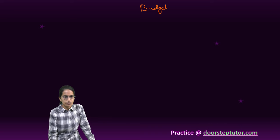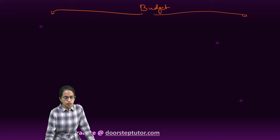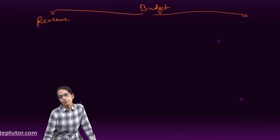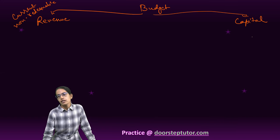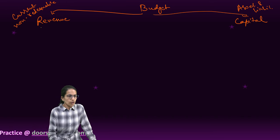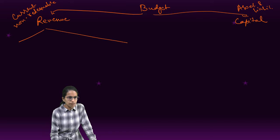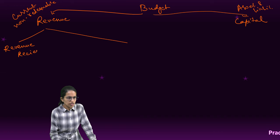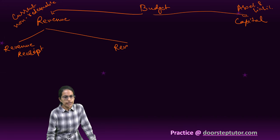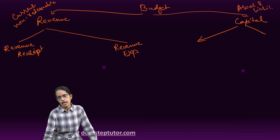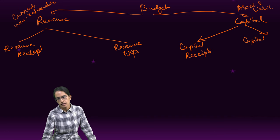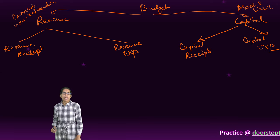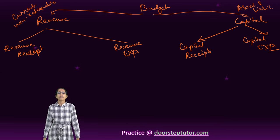Broadly, a budget can be classified under two heads: the revenue budget and the capital budget. Revenue budget covers the current financial year and is non-redeemable. Capital budget covers assets and liabilities. Under revenue, we can further classify into revenue receipts and revenue expenditure; and under capital budget into capital receipts and capital expenditure.